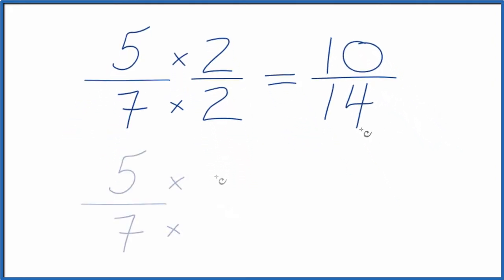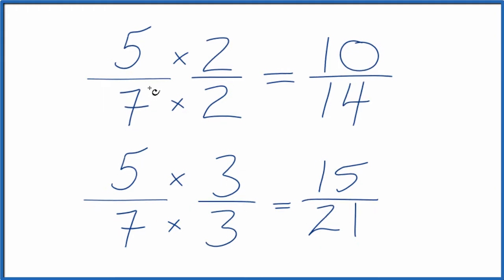Let's try another one. We could multiply it by 3/3, and when we do that, we're multiplying by 1 again. We get 15/21, which is another equivalent fraction for 5/7.